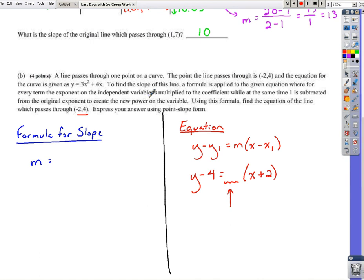Okay, I'm going to stop there for a minute. The independent variable, what's that? The independent variable is going to be x for a function. And we're looking at the exponent right now on these two terms. So the exponent here is 2, the exponent here is 1. Okay, if I continue on, it says it's multiplied to the coefficient. Okay, wait a minute, the coefficient. The coefficient on these terms, well, it's 3 on the first one, 4 on the second. Well, at the same time, 1 is subtracted from the original exponent to create new powers on the variables.